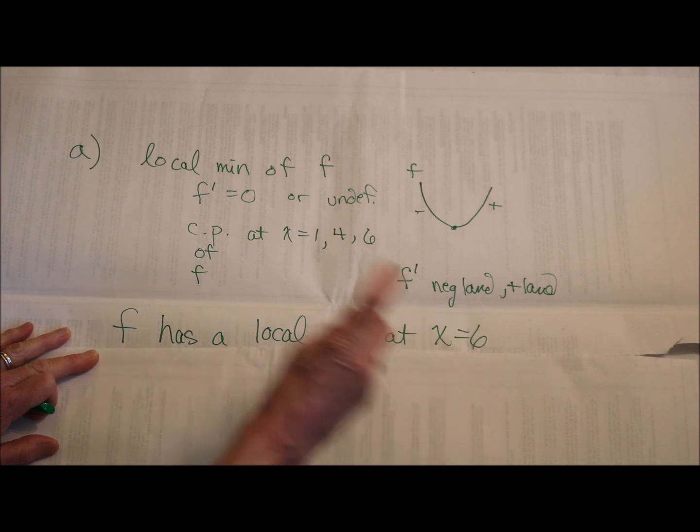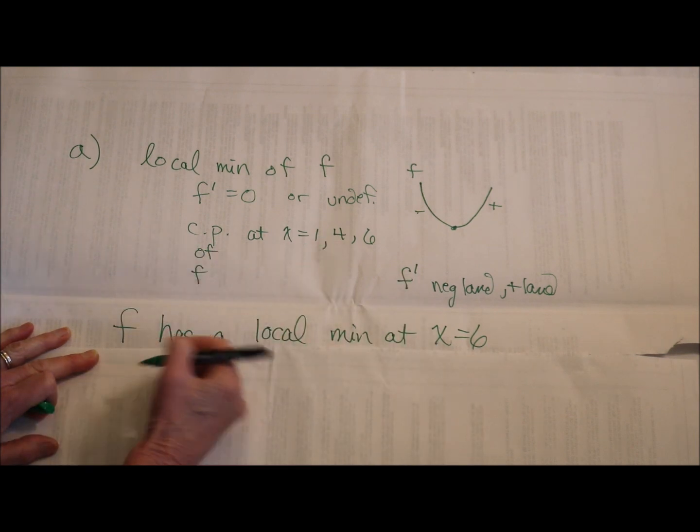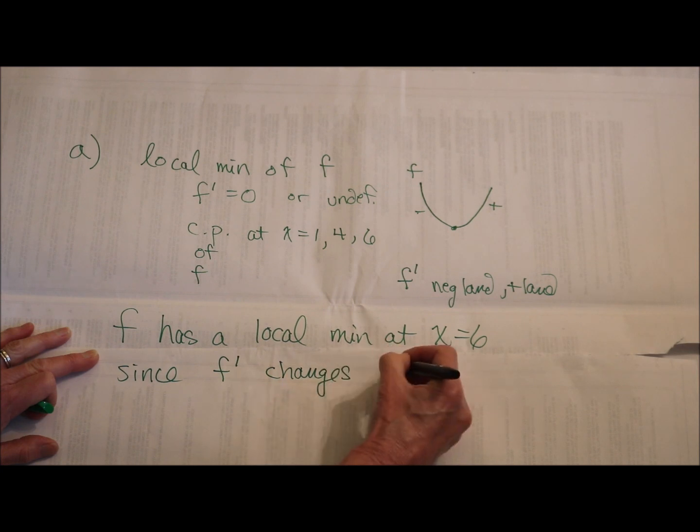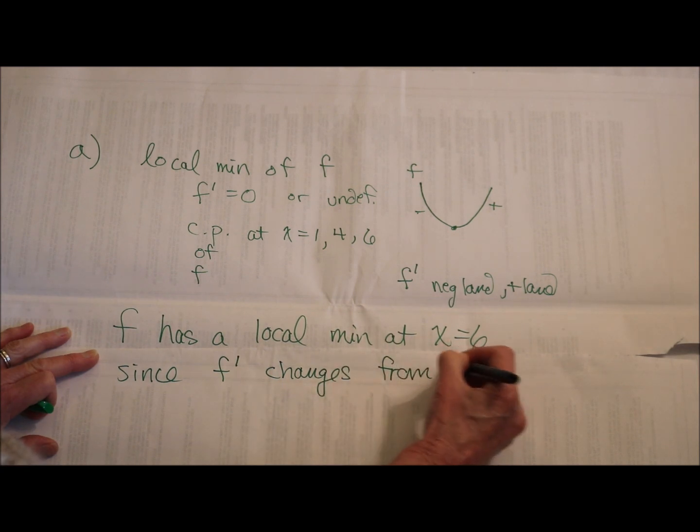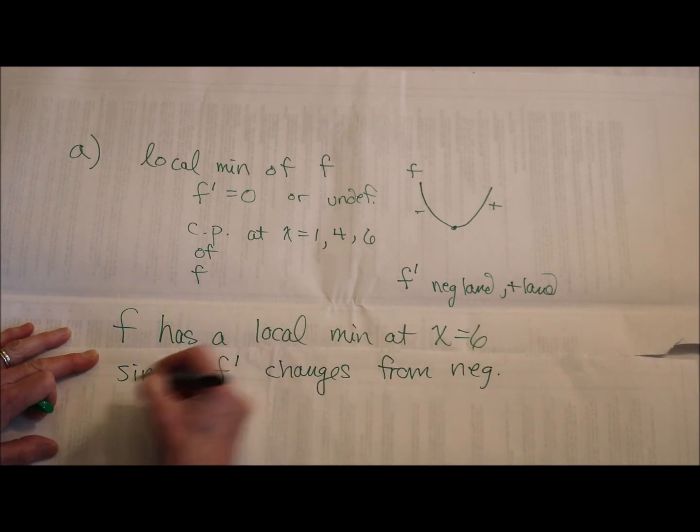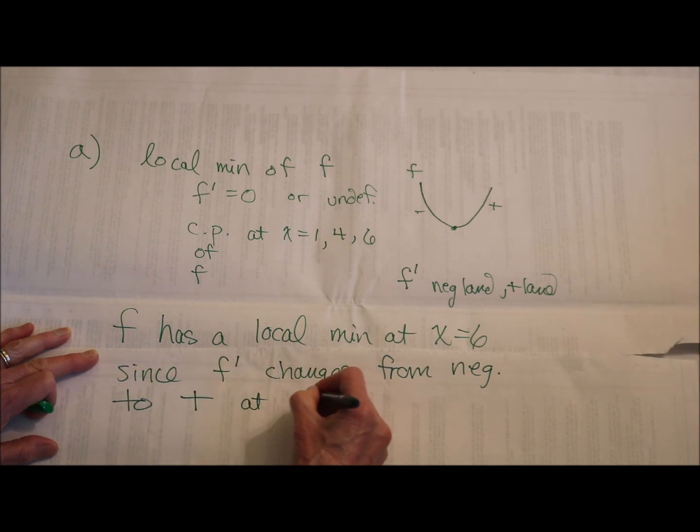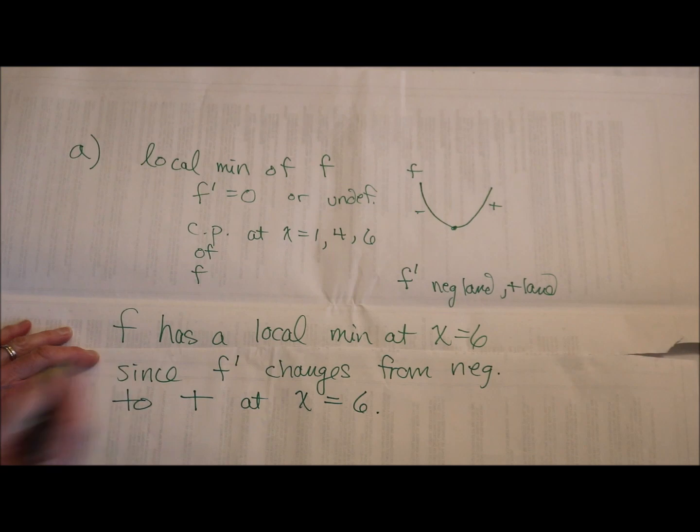Now you have to say why, and you can be short and concise but clear. Since f prime changes from negative to positive at x equals 6. That is sufficient.